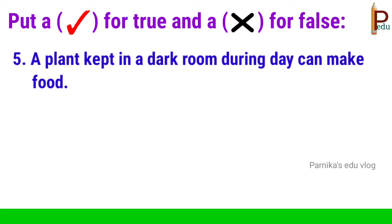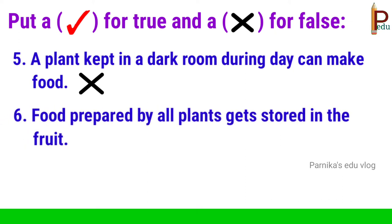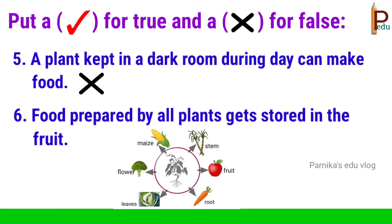Fifth one: a plant kept in a dark room during the day can make food. It is a false statement because without sunlight, a plant cannot make its own food. Sixth one: food prepared by all plants gets stored in the fruit. It is a wrong statement.